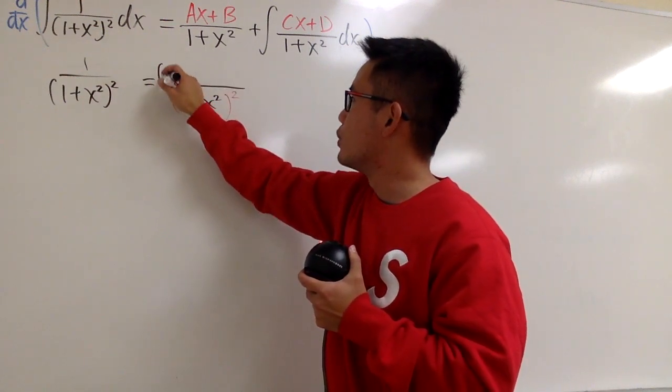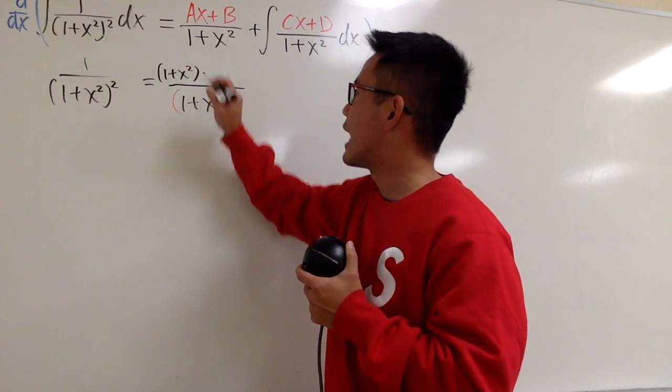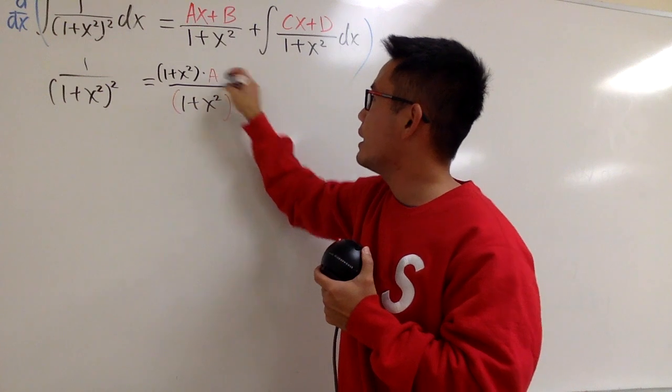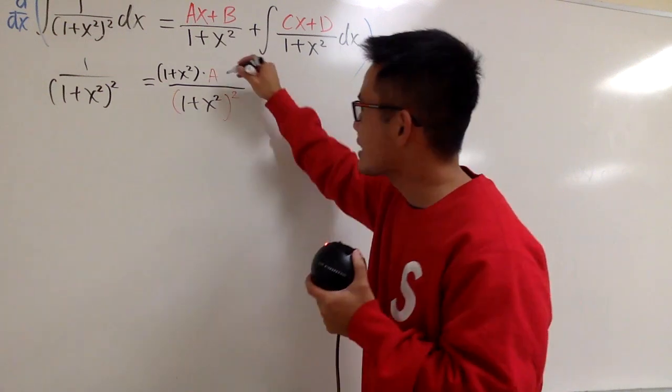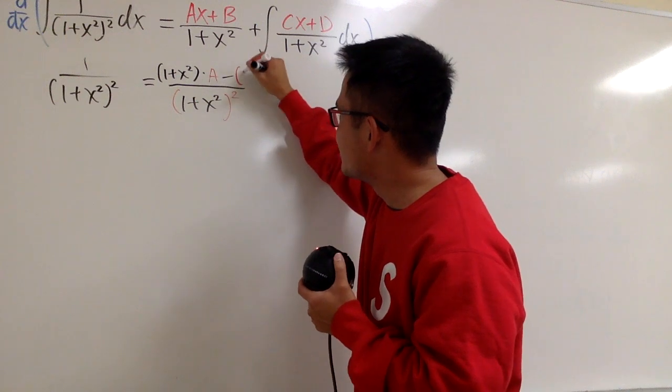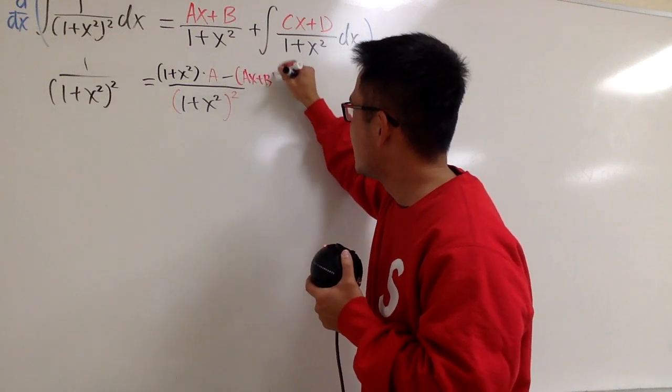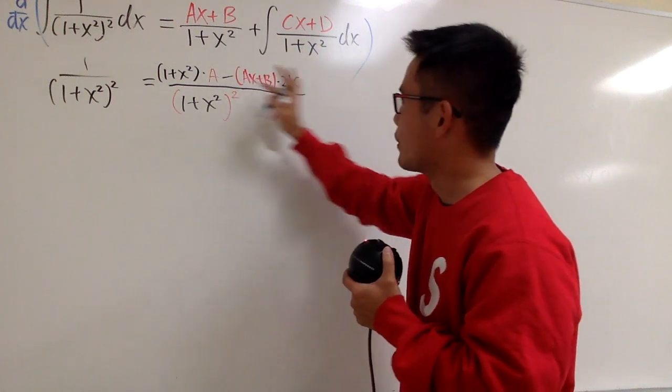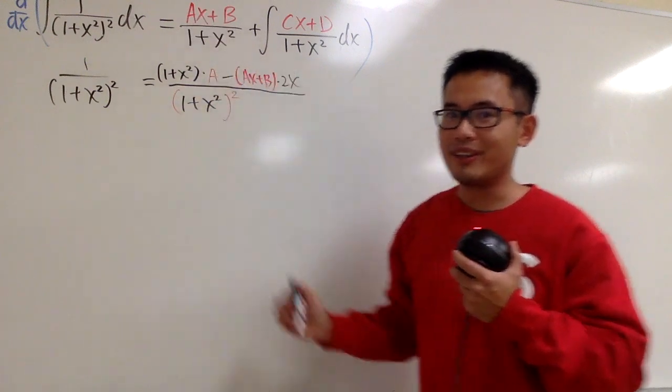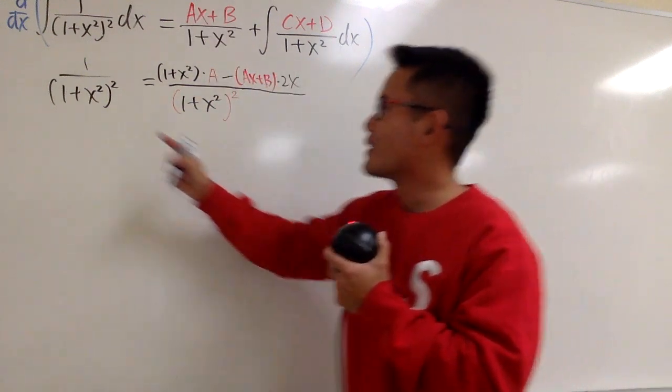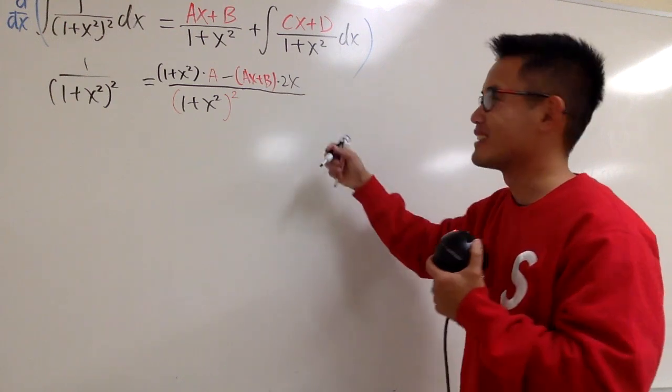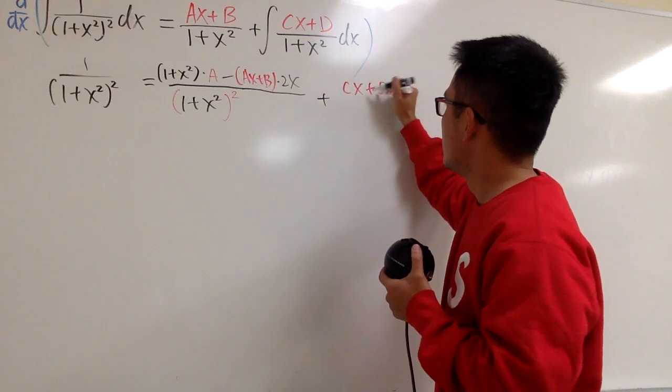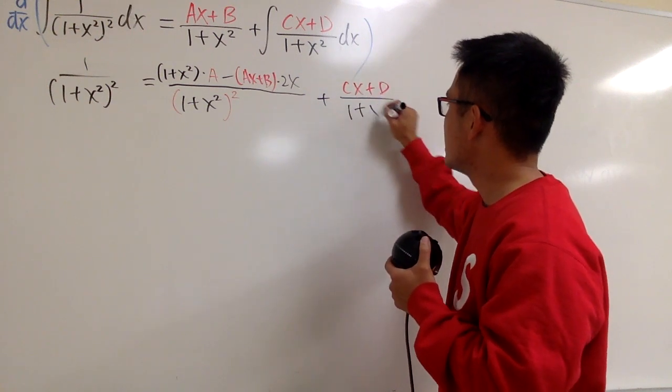And we will have the bottom one, which is 1 plus x squared, times the derivative of the top. The derivative of ax plus b is just a. And the quotient rule says we are going to subtract the top right here, the top function, which is ax plus b, times the derivative of the bottom, which is just 2x. So let's multiply by 2x like this. So this part is the derivative of the middle right here. And lastly, we are going to differentiate this integral. Of course they cancel out. That's great. So we add it with just cx plus d over 1 plus x squared, like that.